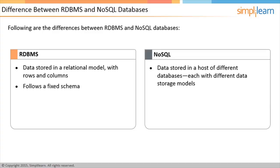Schemas and Flexibility: Each record in an RDBMS follows a fixed schema. The columns are defined and locked before data entry, and each row must contain data for each column. Although this format can be modified, it requires altering the entire database and going offline. On the other hand, schemas in NoSQL are dynamic — you can add columns at any time, and each row need not contain data for each column.